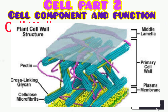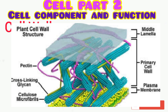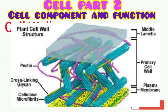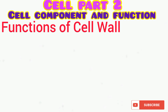The cell wall is divided into the following layers: middle lamella, primary wall, and in some cases, secondary wall. Looking at the diagram, you can see the middle lamella of the plant cell wall, the primary cell wall, the thread-like pectin, and the cellulose microfibers being displayed. These are the various components of the plant cell wall.